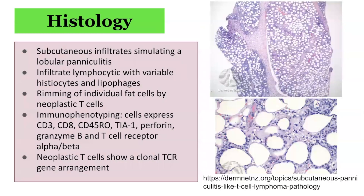The histological appearance of subcutaneous panniculitis-like T-cell lymphoma includes subcutaneous infiltrates simulating a lobular panniculitis. The infiltrate is often lymphocytic, with variable amounts of histiocytes and lipophages. There is rimming of individual fat cells by neoplastic T-cells. Immunophenotyping demonstrates cells which express CD3, CD8, CD45RO, TIA1, perforin, granzyme B, and T-cell receptor alpha and beta. Neoplastic T-cells demonstrate a clonal T-cell receptor gene rearrangement.